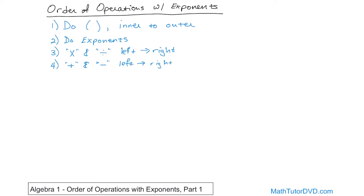I'm writing it down on the board in real time because I want it to sink in. The only thing different we've added to this list is the exponents. What I taught you in the past: parentheses first inner to outer, then multiplication and division left to right, then addition and subtraction left to right. Steps one, three, and four were what we talked about before. Now that you know about exponents, they come right after parentheses — you always do those next.